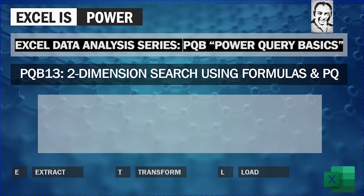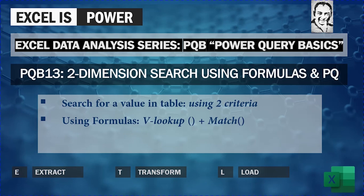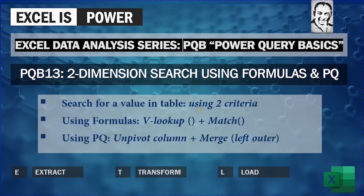Welcome to a new video from the Accelerated Analysis series - PQB or Power Query Basics. This is PQB 13. We are going to see how we can perform two-dimension search using formulas and Power Query. Two-dimension search means you can search for a value in a table using two criteria. In the first section we'll use VLOOKUP plus MATCH, and in the second half we'll use Power Query.